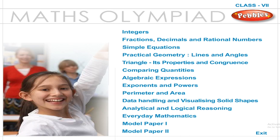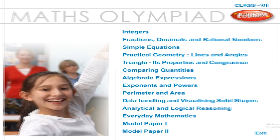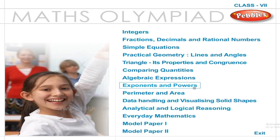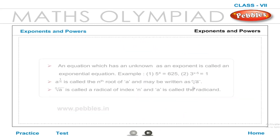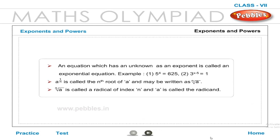Maths Olympiad class 7: exponents and powers. An equation which has an unknown as an exponent is called an exponential equation. Example: 5 to the power of 4 is equal to 625. 3 raised to x minus 5 is equal to 1.